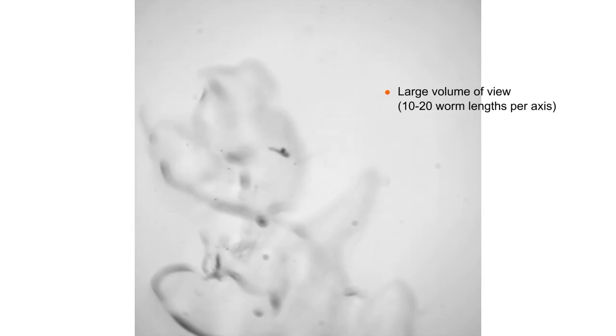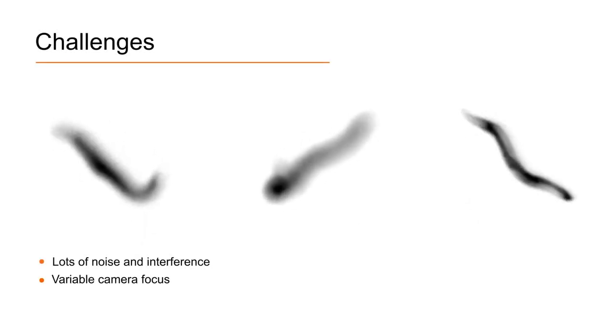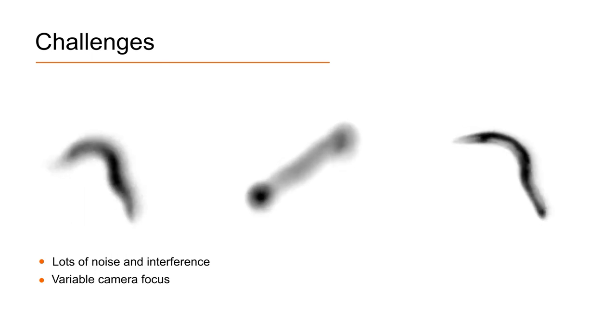This means, as the worm explores this volume, it frequently appears out of focus in one or more of the cameras. Air bubbles and dirt trapped in the gel along with old tracks are difficult to differentiate from the transparent worm, particularly at the tapered ends.